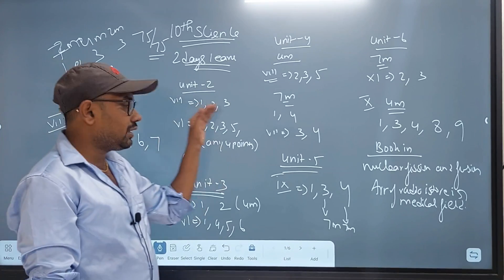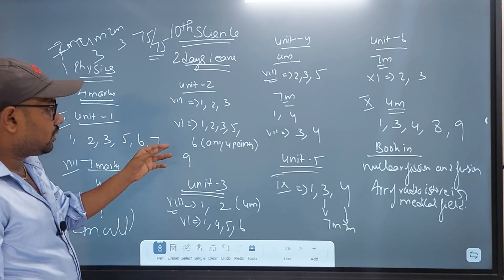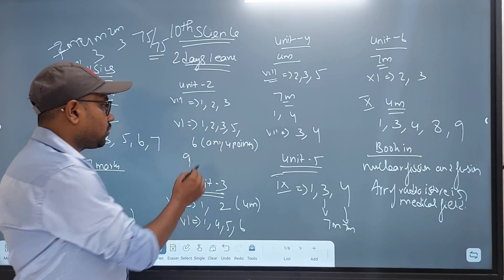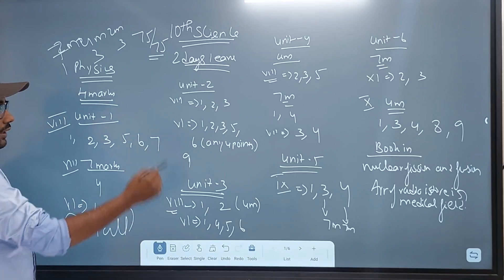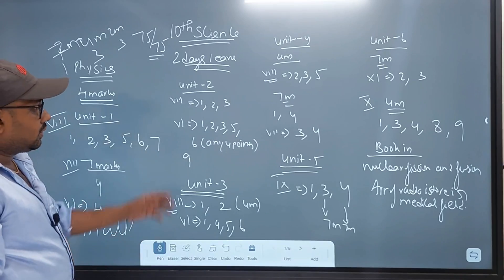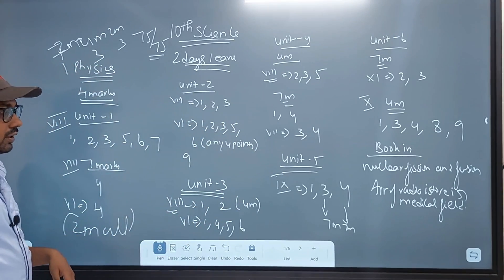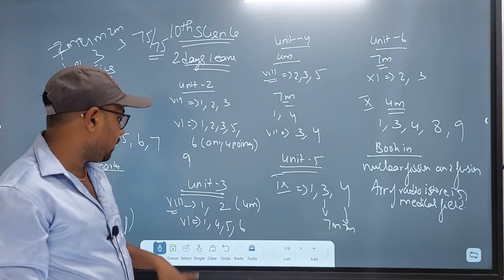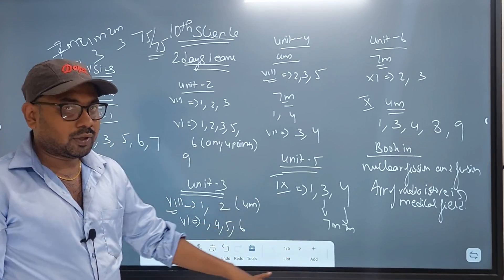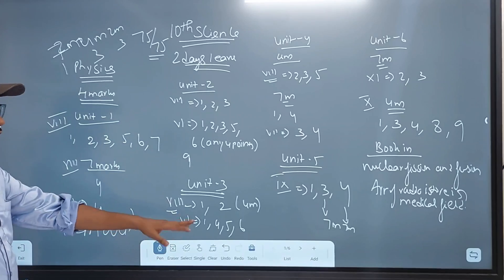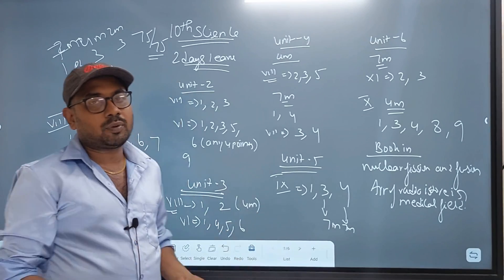Unit 2: Romans 7, questions 1, 2, 3. In 6 marks, questions 1, 2, 3, 5. In 6 marks, question 1 is 4 marks. In 9 marks, questions 1, 2, 3, 5. In 9 marks, question 1 is 4 marks.